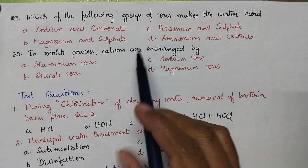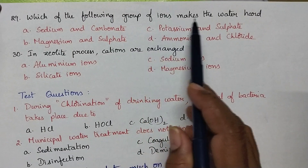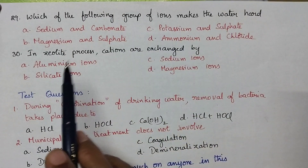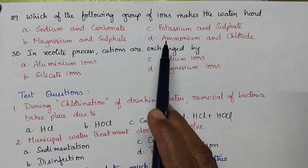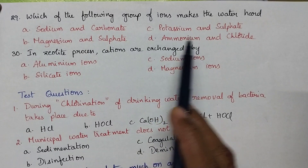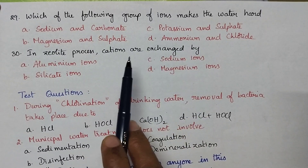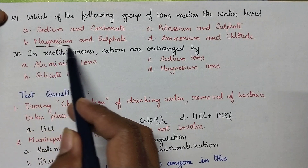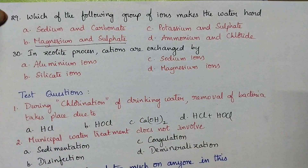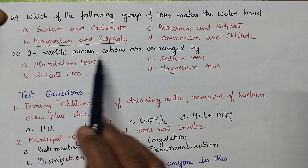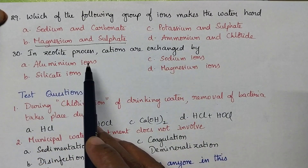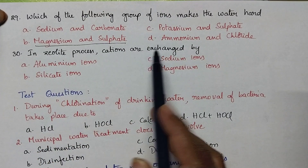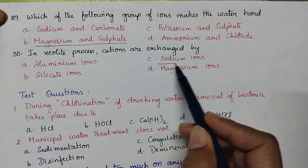Which group of ions makes water hard? The hardness of water is due to the bicarbonates, chlorides, and sulphates of calcium and magnesium. So, magnesium and sulphate ions are responsible for hardness of water. In the zeolite process, calcium and magnesium cations are exchanged by sodium ions.